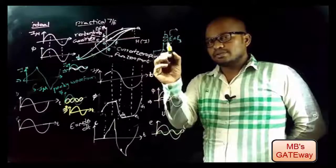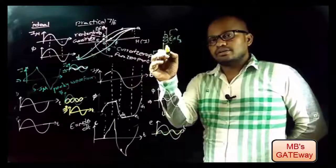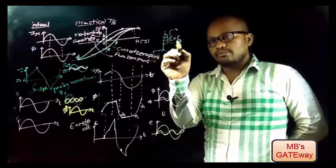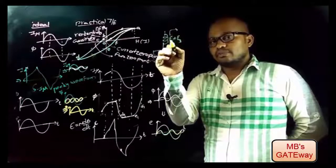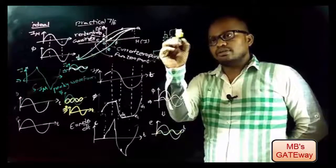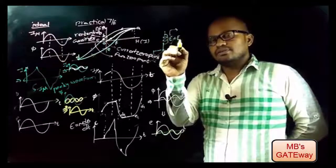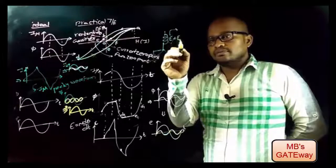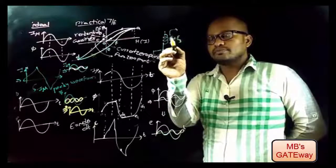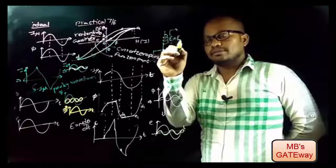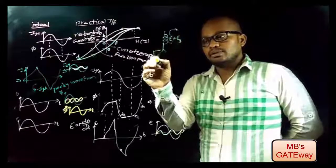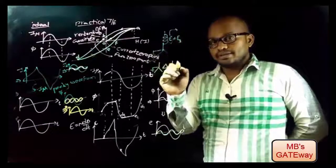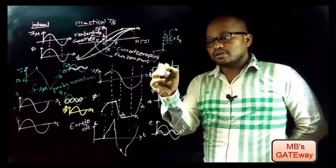To get sinusoidal output from the transformer with sinusoidal input, we need to reduce the third-order harmonic to zero. Recalling the concept from alternators: the induced EMF contains a fundamental component and a third-order harmonic. The third-order harmonic is a co-phasor — a triple-line harmonic that doesn't satisfy the fundamental property. There is no path for triple-line harmonics from phase to phase or line to line, and these harmonics are reduced by providing a neutral connection, i.e., by providing a current path.